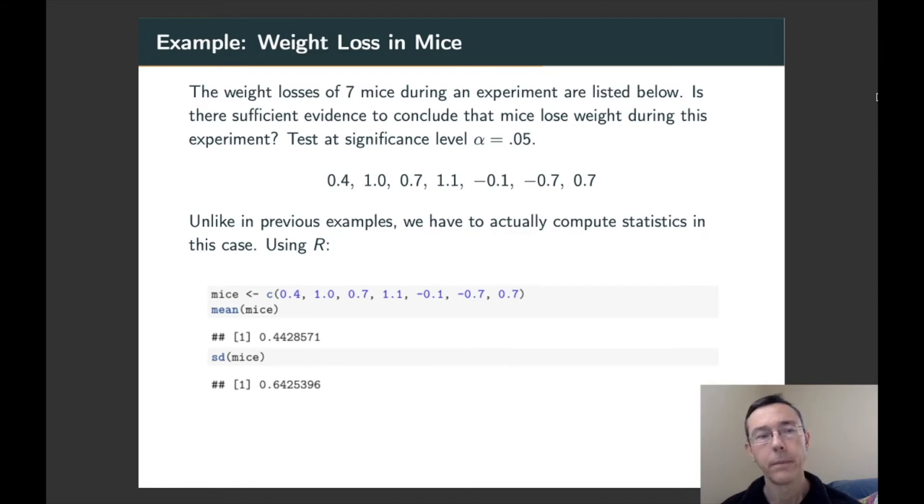Let's do an example. The weight losses of seven mice during an experiment are listed below. Is there sufficient evidence to conclude that mice lose weight during this experiment? Test at significance level alpha equals 0.05. So here we're not given a population standard deviation, so we're definitely in a t-test situation. Even more, we're not even given the sample standard deviation or sample mean. We have to compute those. So I've encoded this data as a variable named mice in R, and then I've gotten the mean 0.44 and the standard deviation 0.64.